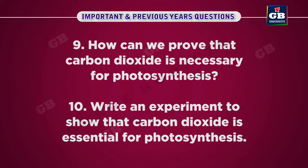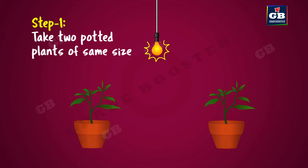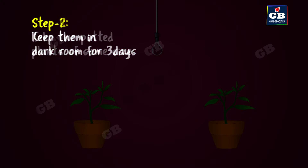How can we prove that carbon dioxide is necessary for photosynthesis? We can prove that carbon dioxide is necessary for photosynthesis by a simple experiment. To do this experiment, we need two healthy potted plants of the same size. We have to keep them in a dark room for three days to destarch them.